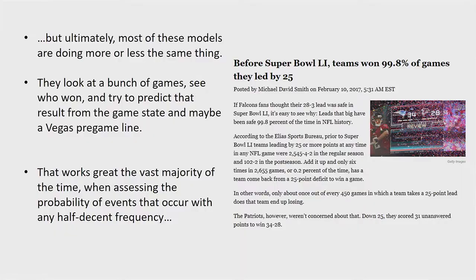But to answer a question like this about the 2016 Super Bowl, we need to take a different approach. Most of the existing models, although they use lots of different fancy-pants techniques, they're pretty much doing the same thing. They've got a historical track record of games, they know who won and lost each one, they look at the game state — down, yard line, score, yards to go, and time remaining — and they try to ask a computer to predict the result of the game based on that information. Maybe they throw in a Vegas pregame line to adjust for team quality.